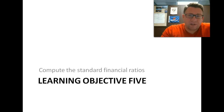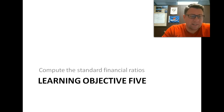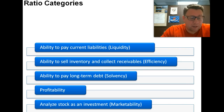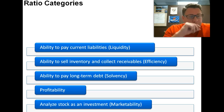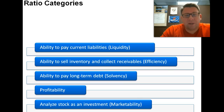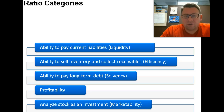Welcome to this overview of ratio analysis. This is learning objective 5. There are five categories that we do ratio analysis for. I've got what the book calls it here and then maybe a more common term. So the ability to pay current liabilities — this is really our liquidity ratios.